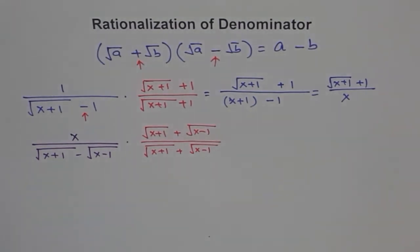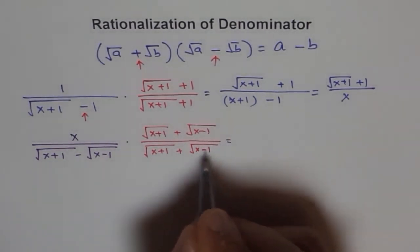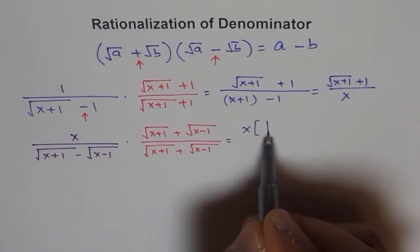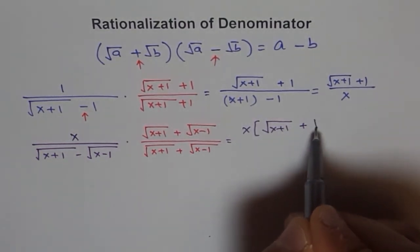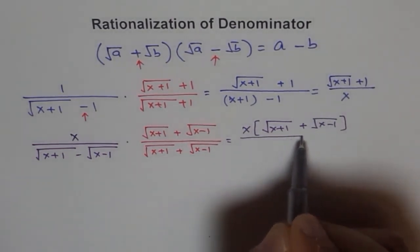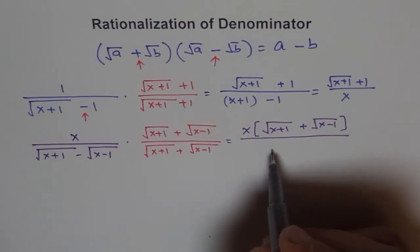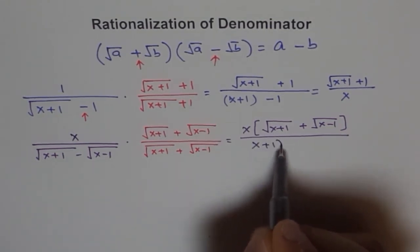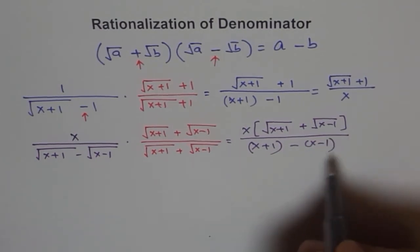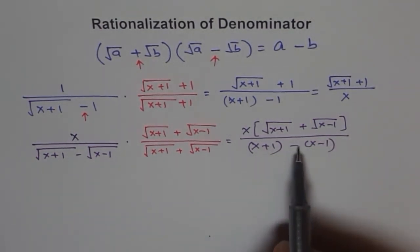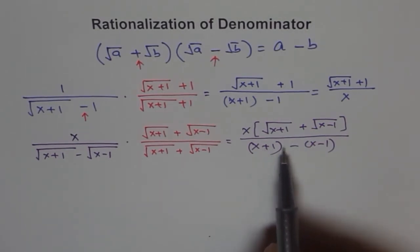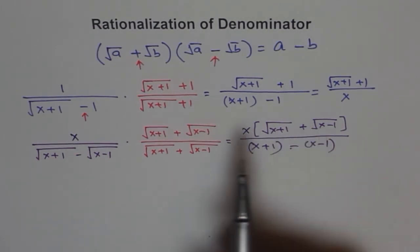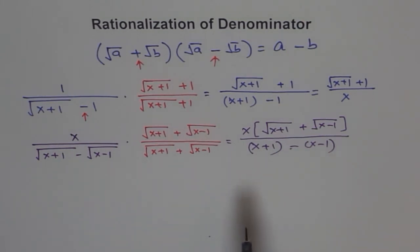When you do this, you get rid of the square roots in the denominator. In the numerator you get x times square root of x plus 1 and related terms. The denominator becomes x plus 1 minus (x minus 1). Simplifying: x minus x is 0, and 1 minus of minus 1 is 2, so the denominator is just 2. You are left with the expression over 2. That is how you use rationalization.